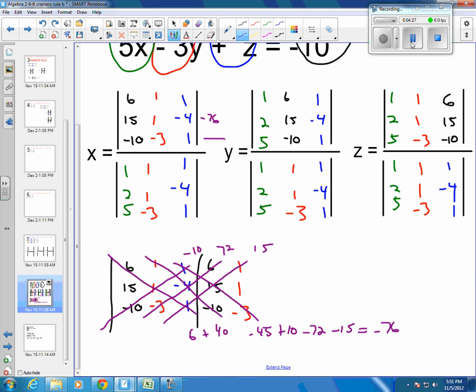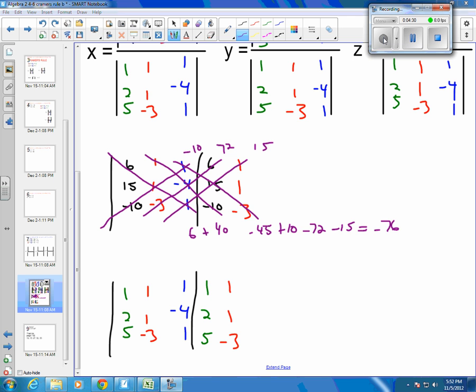And then you need to do the bottom of the fraction. I've copied over the bottom part of my fraction. The 1, 2, 5, 1, 1, negative 3, 1, negative 4, 1. I've recopied my first column and my second column so I can do diagonals. So, I've got 1 times 1 times 1 is 1. 1 times 4 times 5 is a negative 20. And 1 times 2 times 3 is a negative 6.